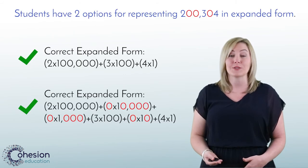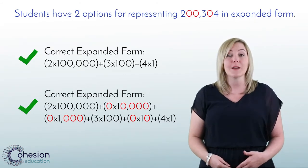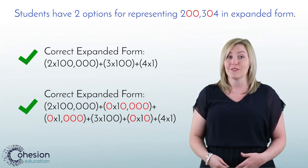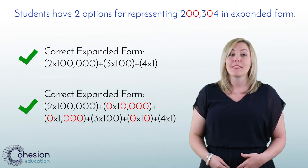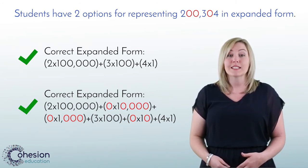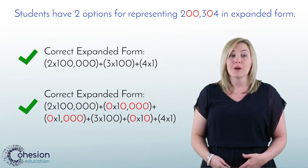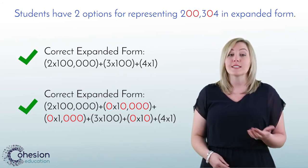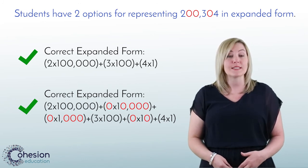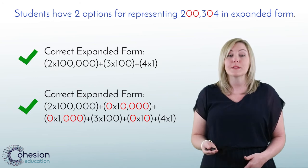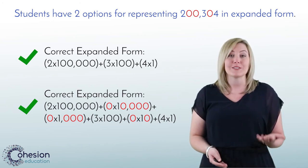Another common error encountered with this skill occurs when a given number has zeros in it and students are asked to write the number in expanded form. For example, the number 200,304 written in expanded form, we just skip over the places that have zero in the place value. To address this error, remind students that we skip over zeros when writing the number in expanded form because zero is a placeholder when a place has no value.